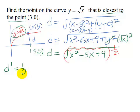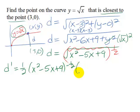So power out in front, decrease the power by 1. That's negative one half then. Chain rule multiplied by the derivative of what's inside. That's going to be 2x minus 5.